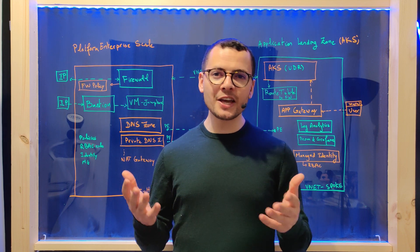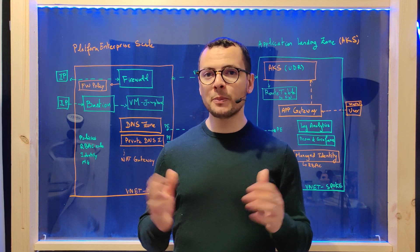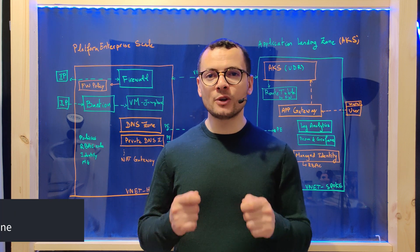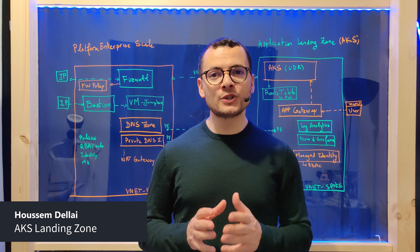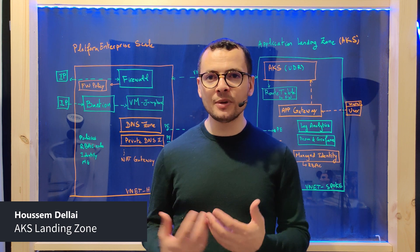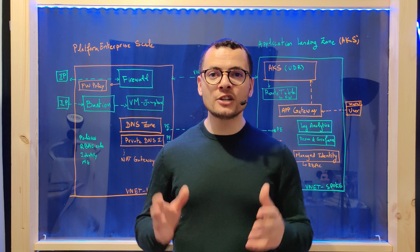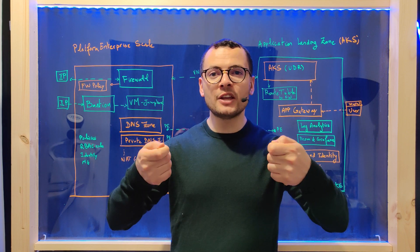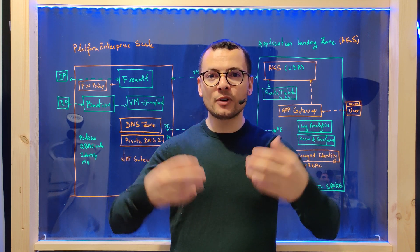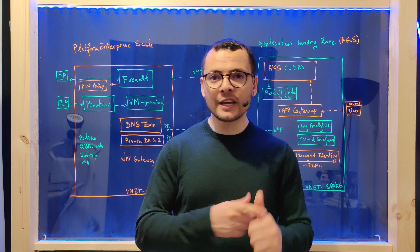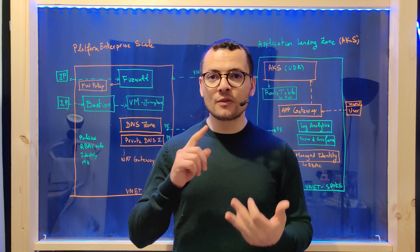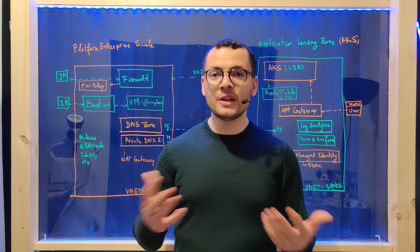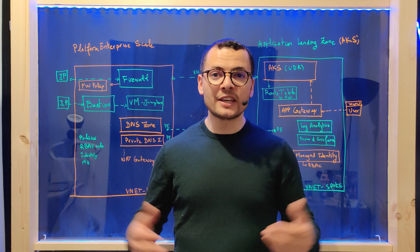Let's learn in this slideboard session how to implement the AKS landing zone within the platform enterprise scale. For an enterprise that wants to build a platform based on a solid and proven architecture using Azure best practices in terms of security, scalability, and governance, they will typically use the Azure Platform Enterprise Scale as the foundational platform, on top of which we can deploy landing zones for AKS, Container Apps, App Services, OpenShift on Azure, and many more.